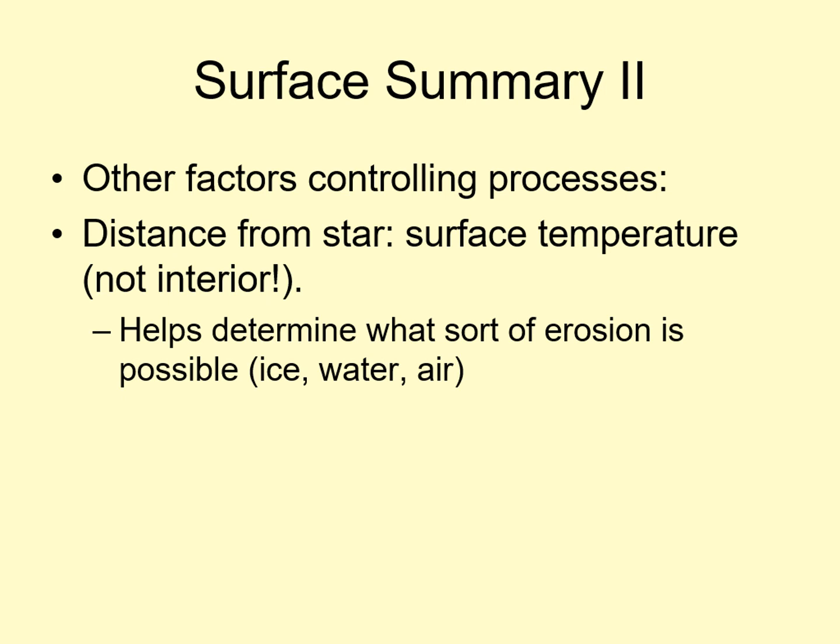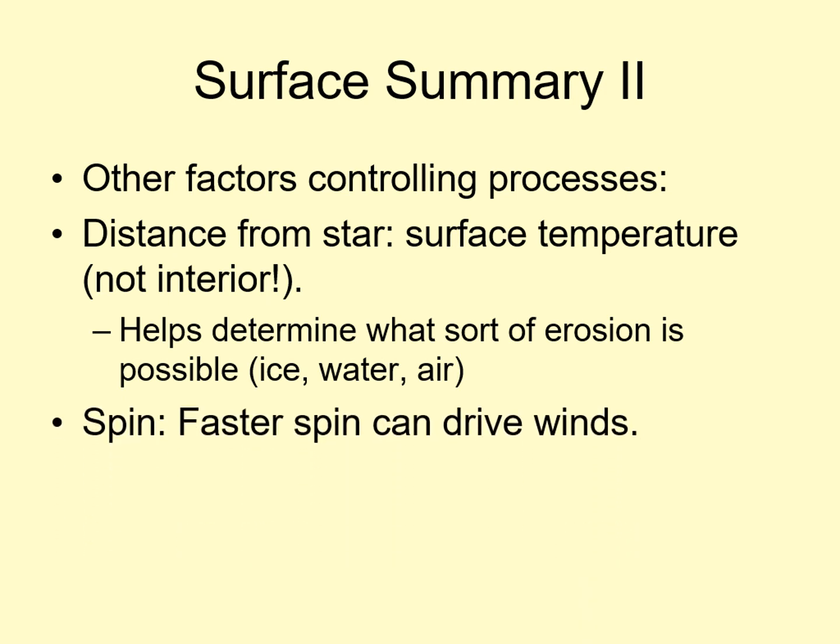Depending on the surface temperature, you might see erosion by moving ice, water, or air. So being close to the sun will make the surface of a planet hotter, which doesn't do much for volcanism or tectonics, but it does determine what sort of erosion is possible on the surface. The other factor to consider is the spin of the planet. Fast spin can drive strong winds and even storms, so it can play a role in erosion.